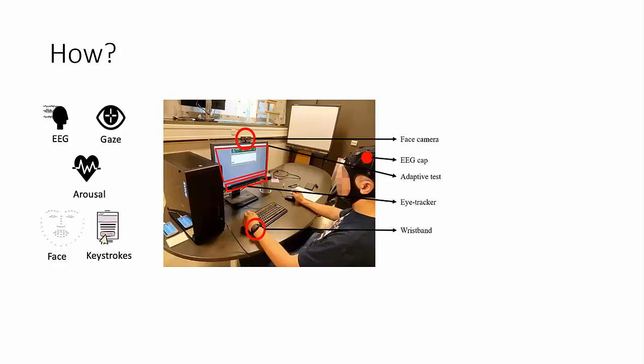A wristband on the wrist to measure the heart rate, the electrodermal activity, the skin temperature, and the blood volume pulse. And we had an adaptive test running that also records their activities like click streams and the reaction times.